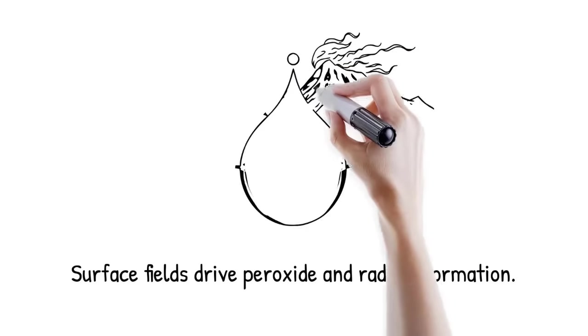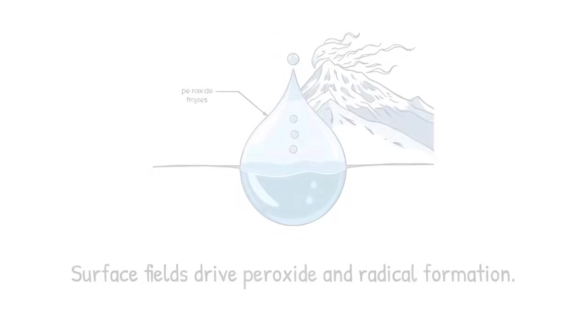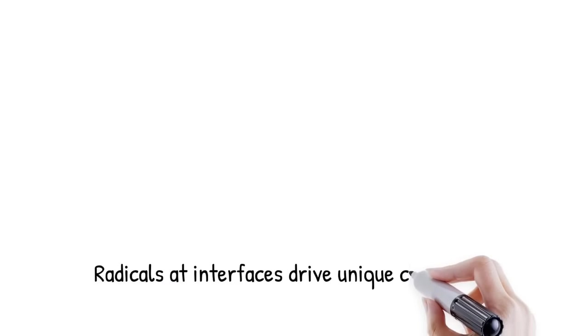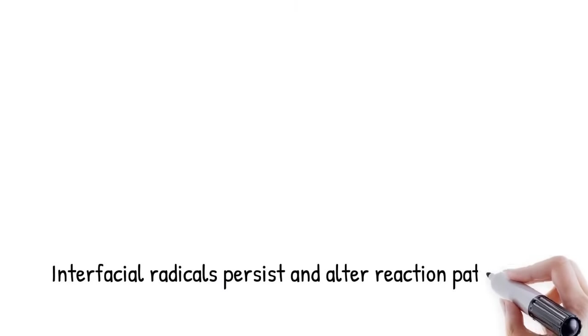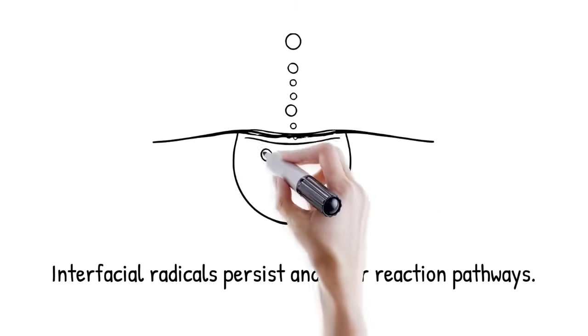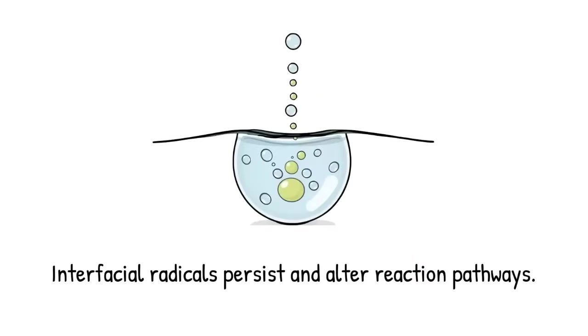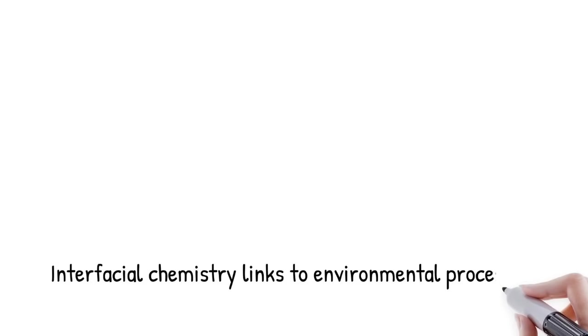Beyond fields, radicals generated at droplet interfaces drive unique chemistry. These highly reactive species initiate redox steps, cleave bonds, and form new ones rapidly. Radicals in bulk are short-lived, but at interfaces they can persist long enough to alter reaction pathways. The constant regeneration of radicals sustains chemical activity. Interfacial radical chemistry explains many of the surprising spontaneous reactions observed. It also links micro-droplet chemistry to atmospheric and environmental processes.